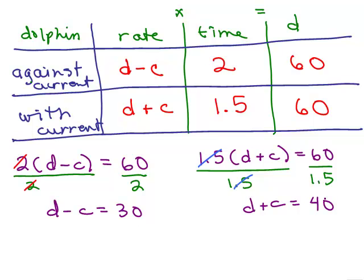Now, I'm not a big fan of calculators myself so I'm just going to show you how I would do this problem. If I have 1.5 times d plus c equals 60,